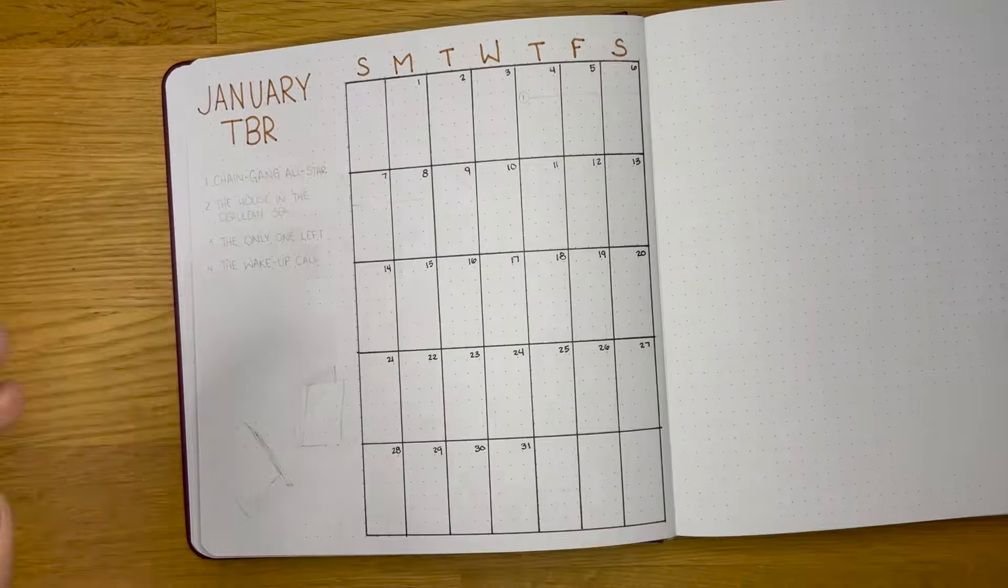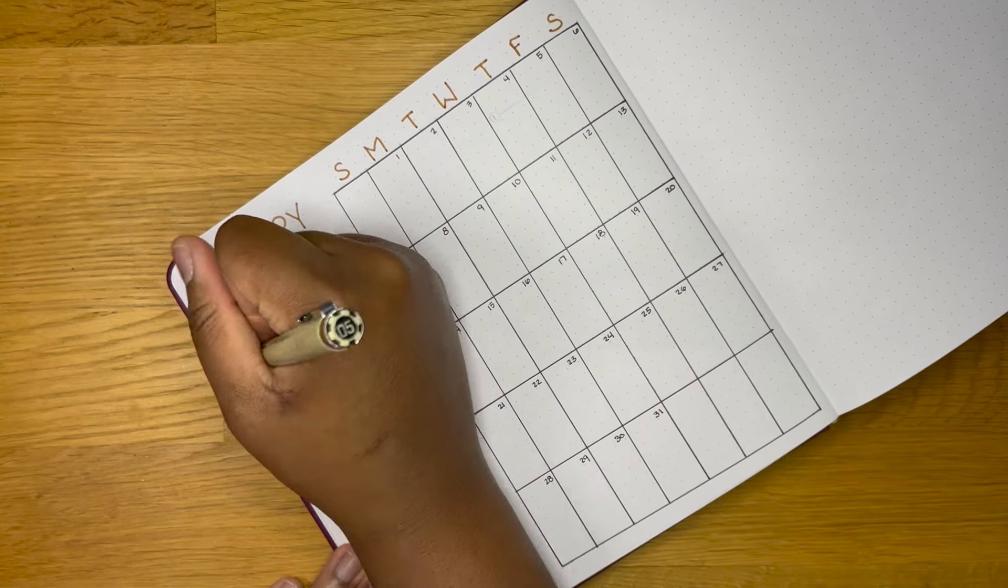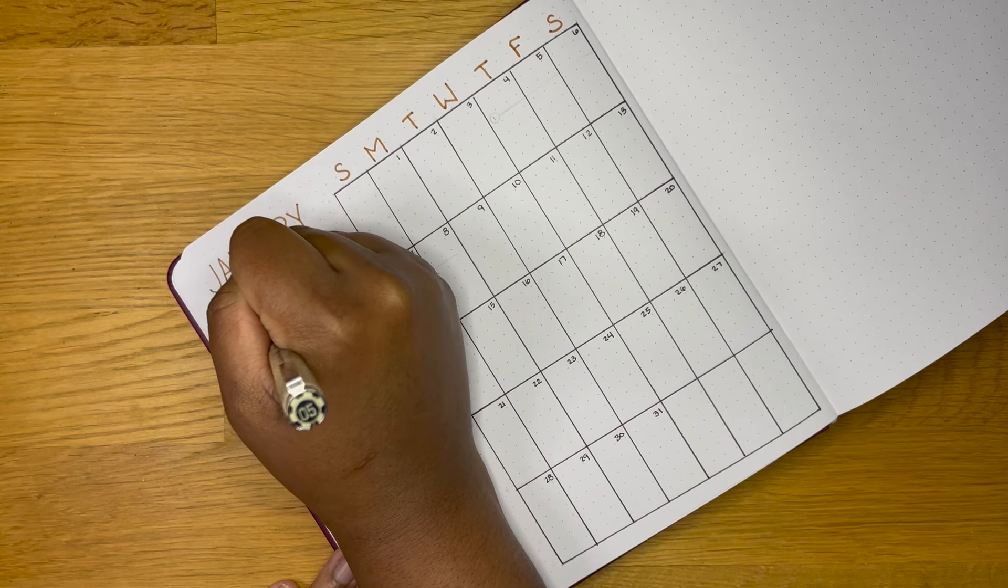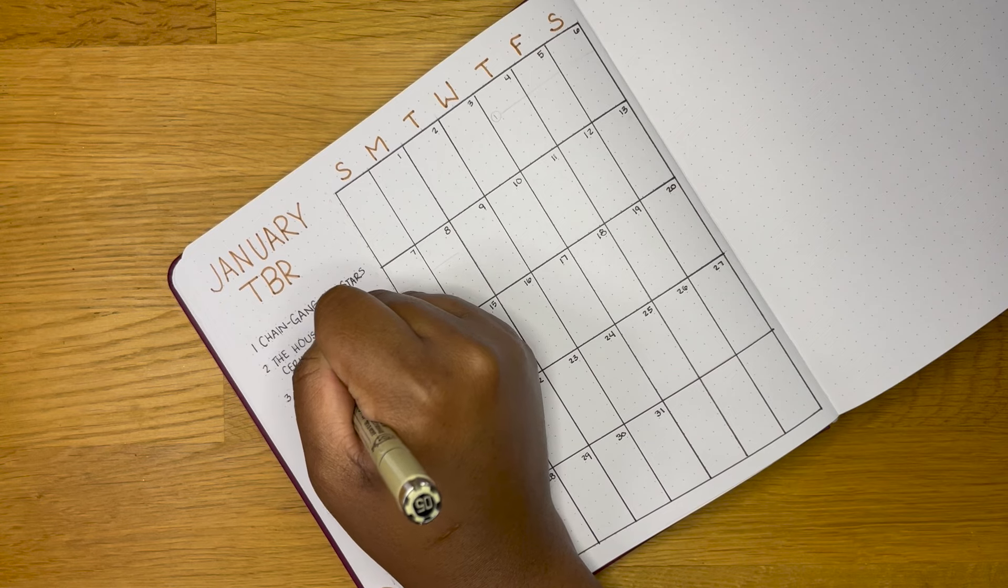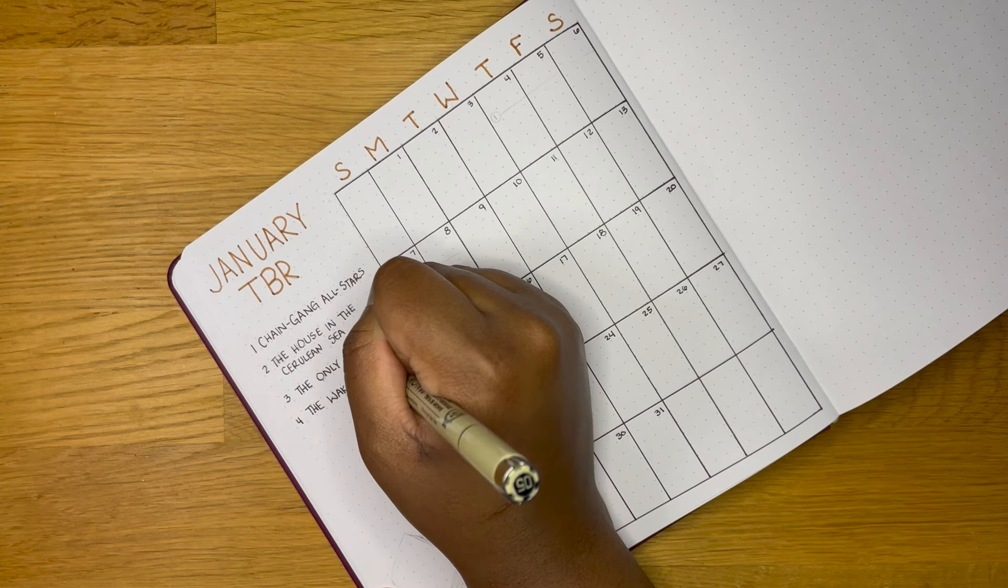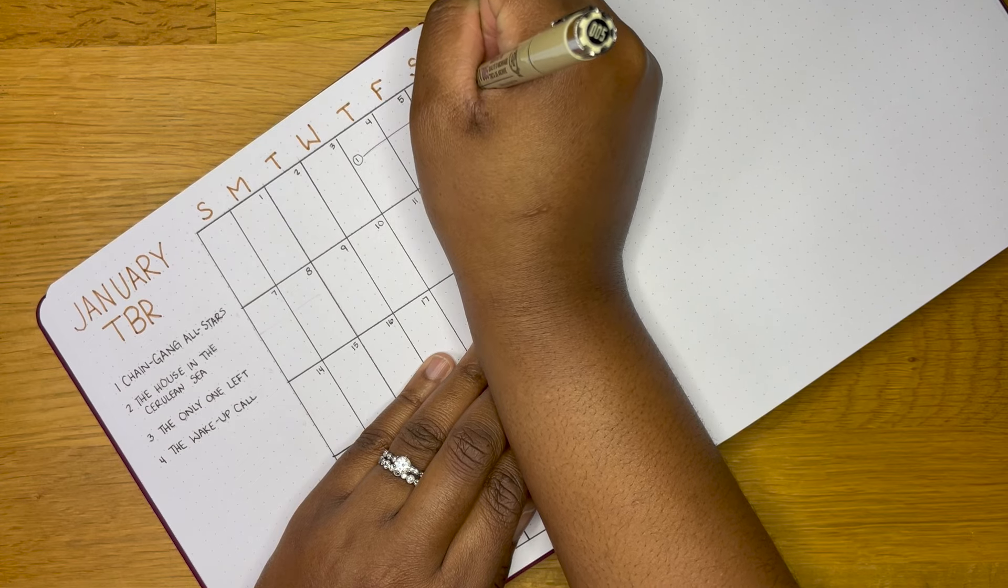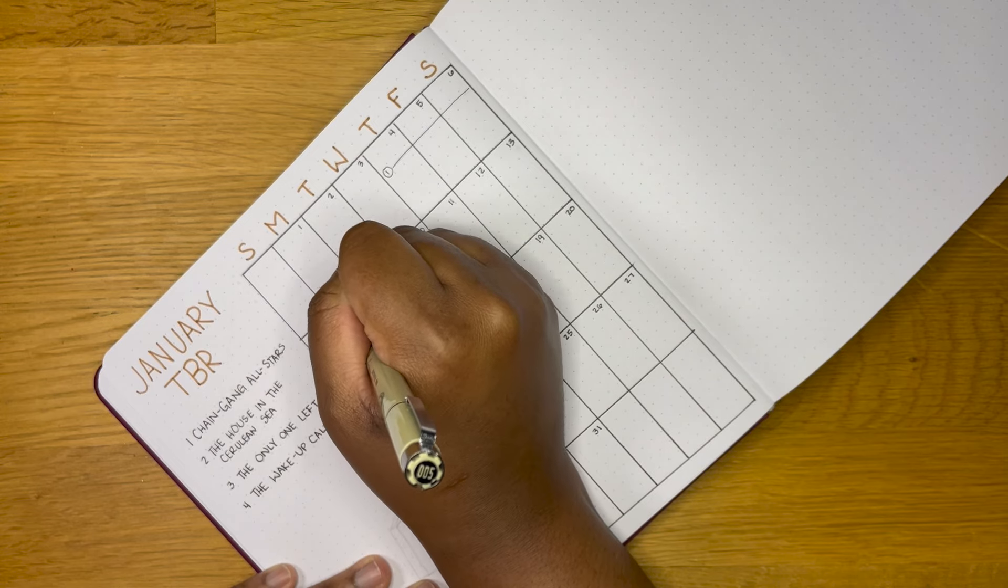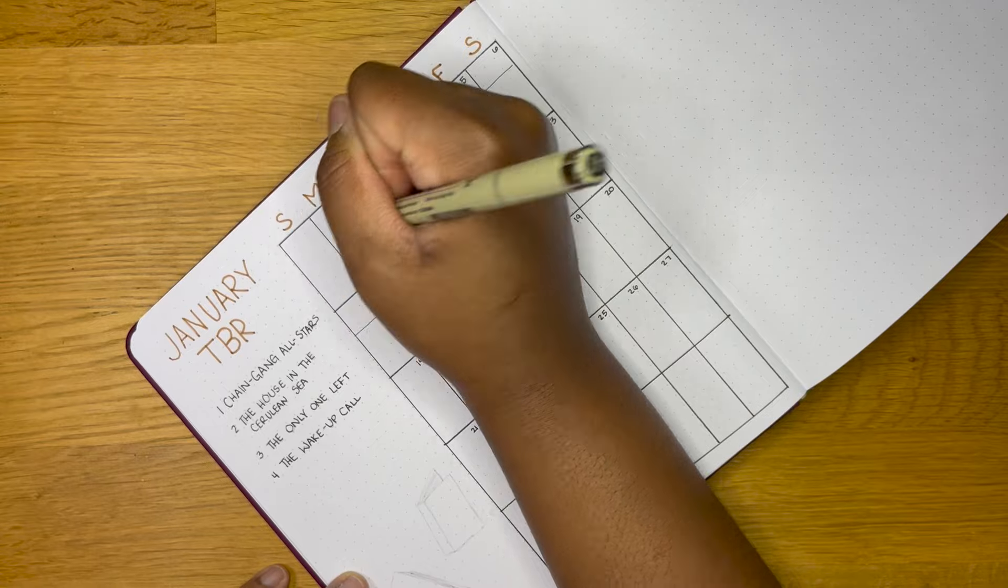Essentially I have the calendar here for January, and then I have my TBR on the left hand side. I numbered each of the books that I plan to read this month, and then whenever I started a book I would put that number on the day that I started it and draw a line all the way until the day I ended it, so I could see how long I was reading a book. When I finish the book I'm going to highlight it on the left hand side to note that it's finished, and same on the calendar.